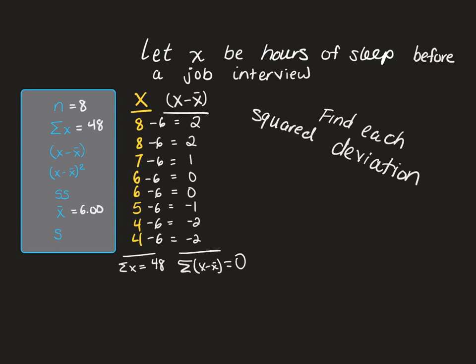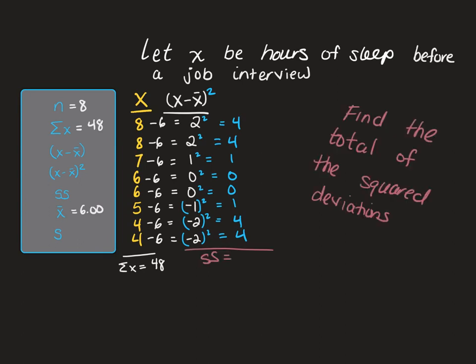Next, we can move on to finding the squared deviations. My squared deviations, in order, are 4, 4, 1, 0, 0, 1, 4, and 4. Finally, I can find the SS. Because we already found each deviation and already squared it, all I need to do is sum them up. And when I do so, I get an SS equal to 18.